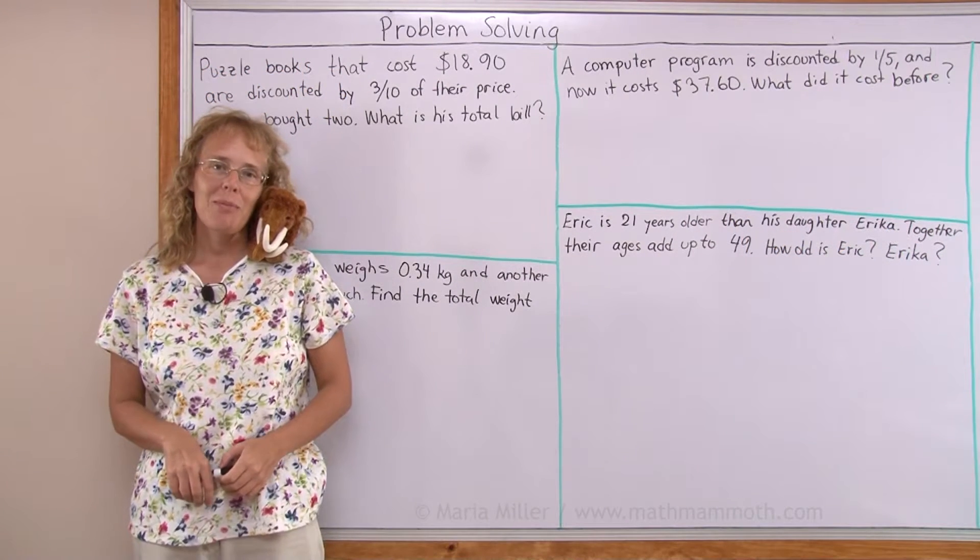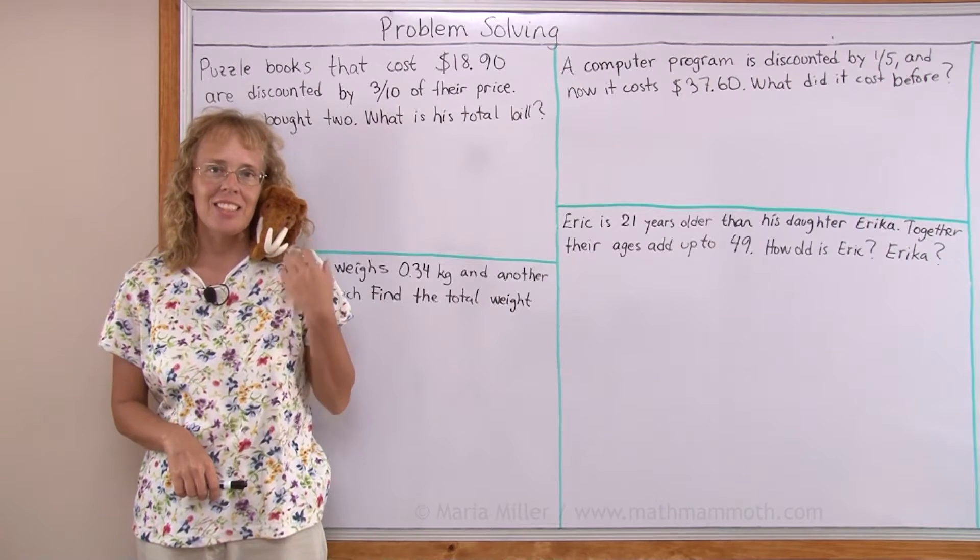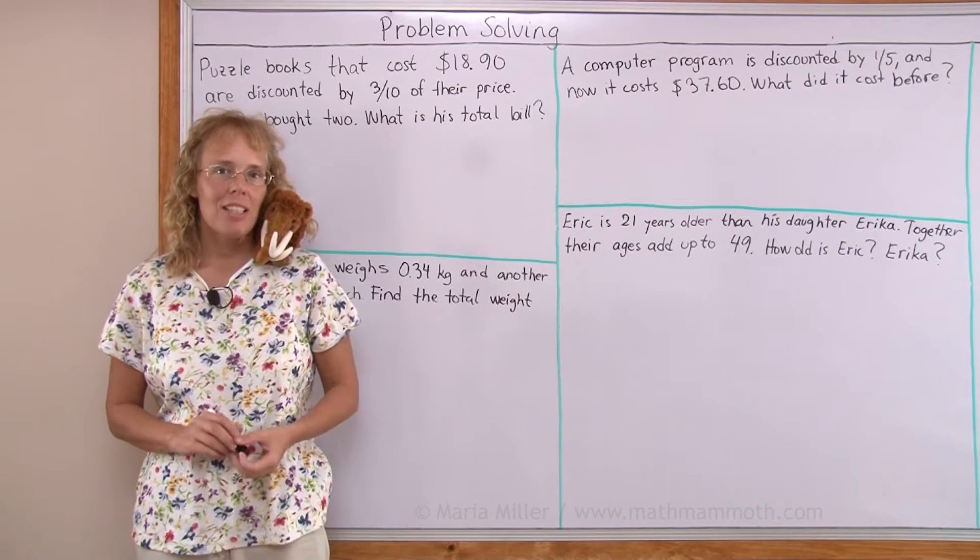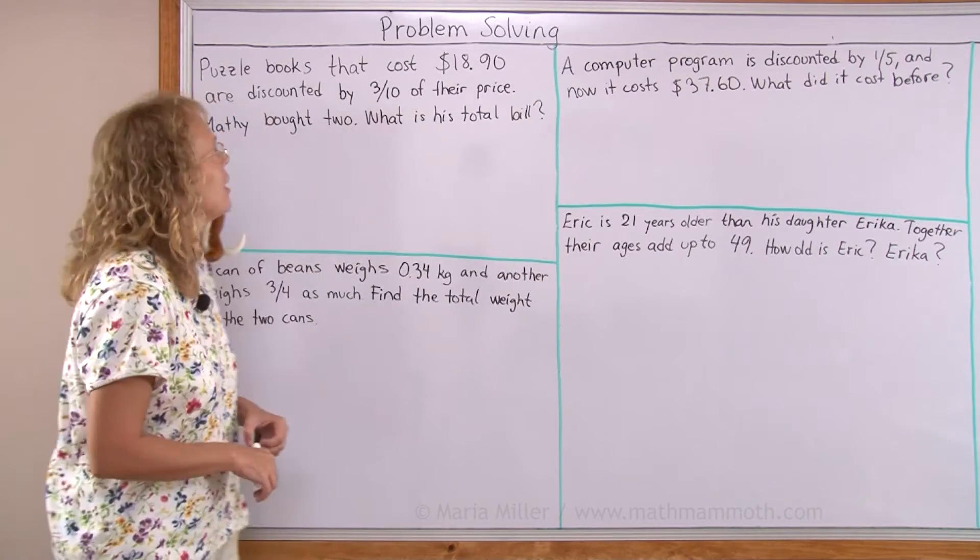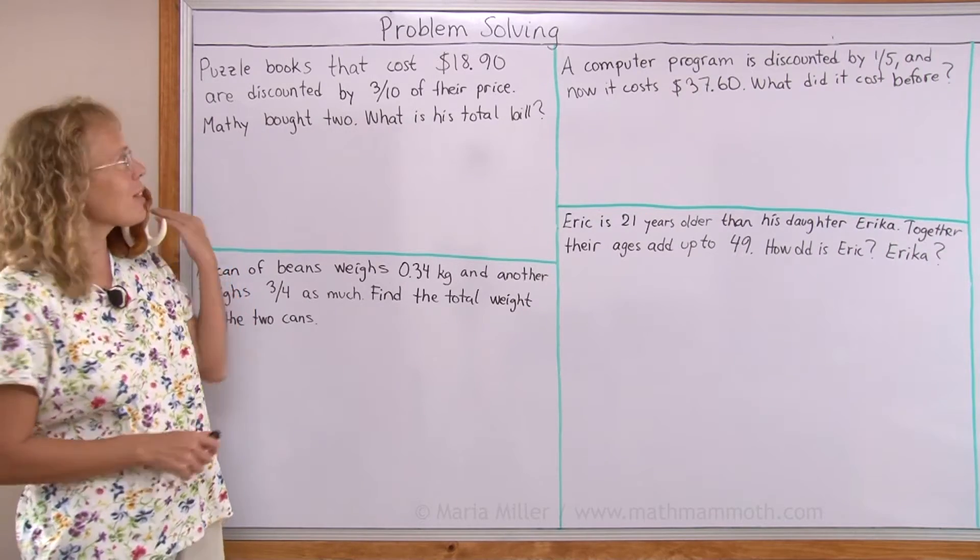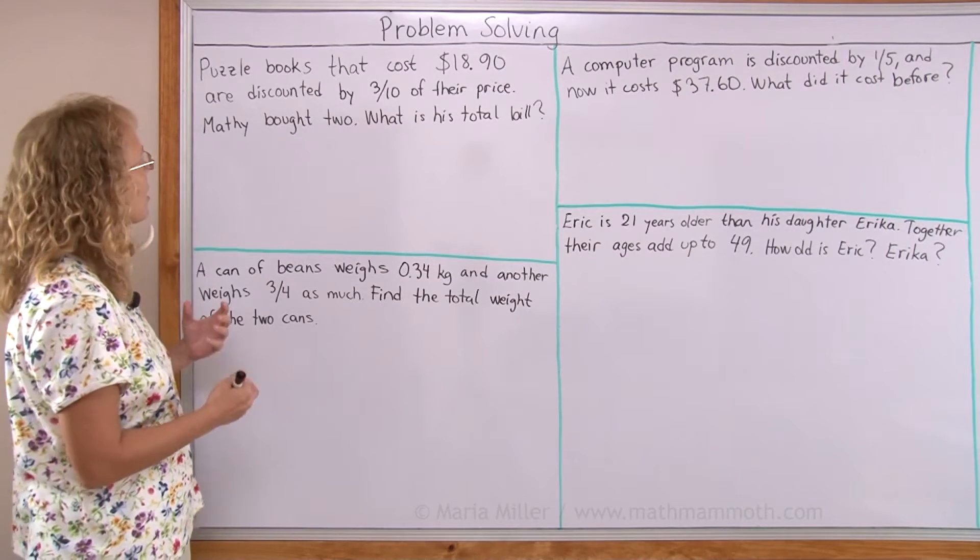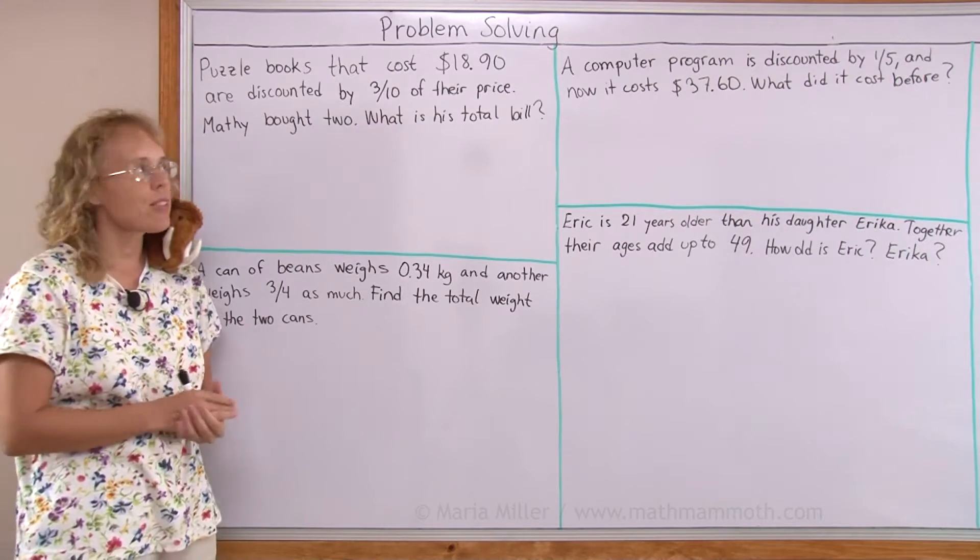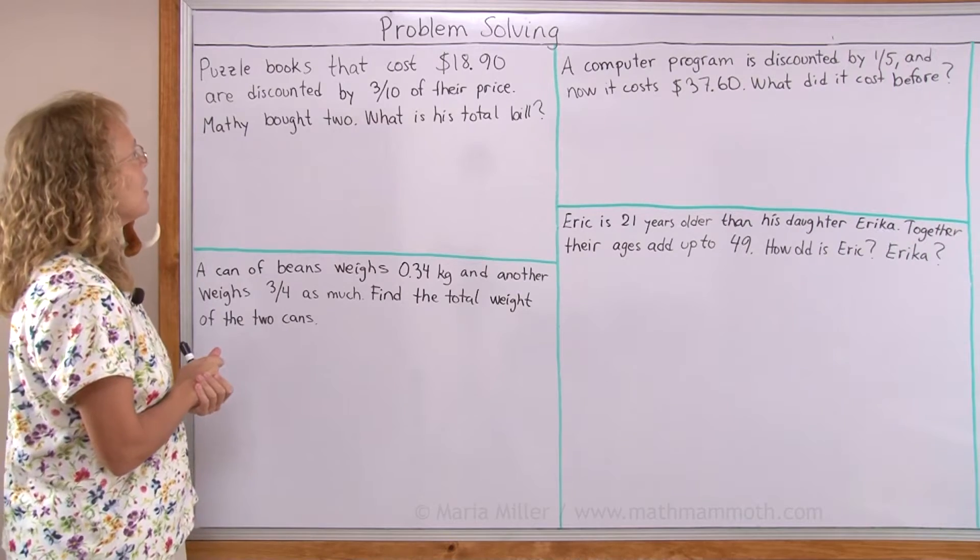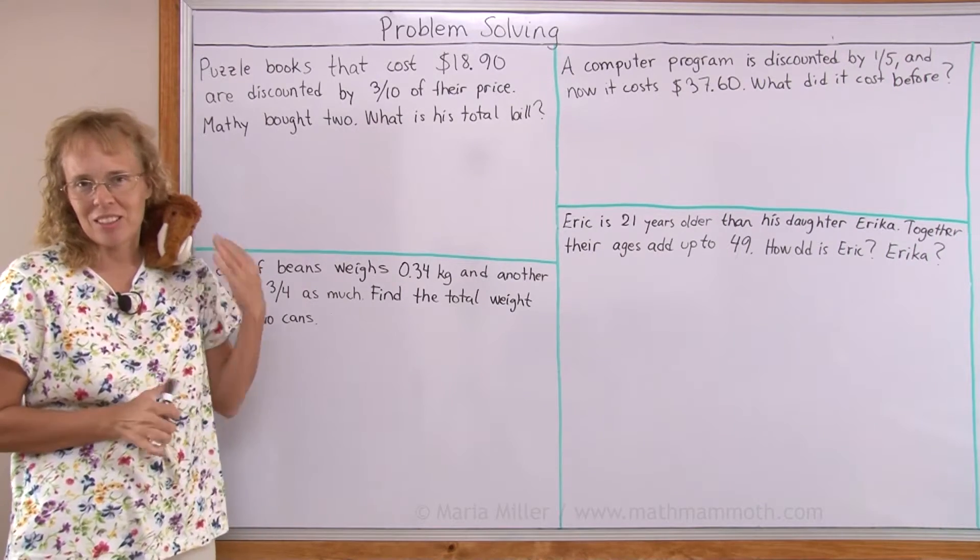Hello, my name is Maria Miller from MathMammoth.com and this is Matty, my mascot and assistant. In this lesson we're going to study some word problems and my first problem is provided by Matty, so thank you Matty. Puzzle books that cost $18.90 normally are now discounted by three-tenths of their price and Matty bought two. What's his total bill? Matty loves puzzles you know.